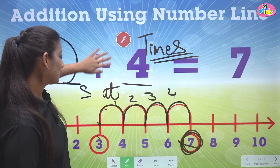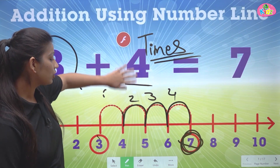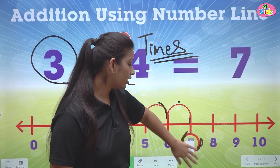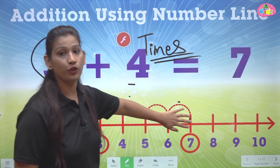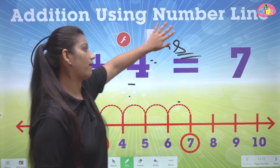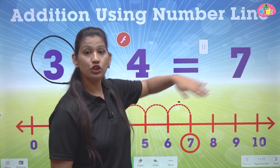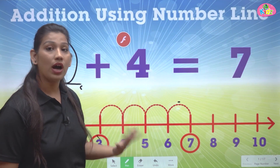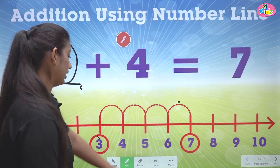So students, you can also do addition on the number line. First, you have to see the number you have to start from. Then you have to see the number of times you have to jump. Let us see one more time how to do this.